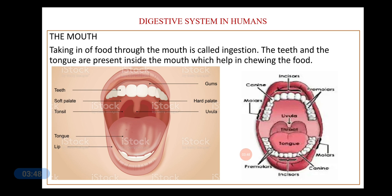Beside the canines on both sides in the upper and lower jaw we have the premolars, and at the further end we have the molars. The premolars and molars help in crushing and grinding the food. When you put a bite of chapati or a spoonful of rice in your mouth, you cannot gulp it down — you must chew it. The tongue along with the teeth also helps in mixing the food with saliva.